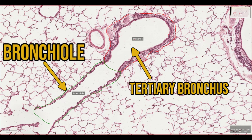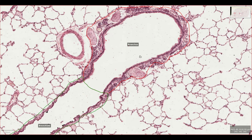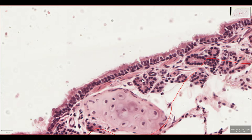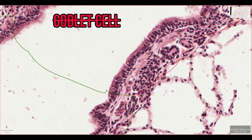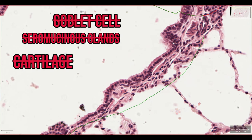The tertiary bronchus is very similar to the larger bronchi, but the smooth muscle layer is more continuous. There are fewer seromucinous glands and the islands of cartilage are smaller and more irregularly spaced. As we follow the bronchus down you'll notice a change in structure. The epithelium loses its goblet cells, there are no seromucinous glands and no cartilage — these three features make this structure a bronchiole.